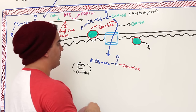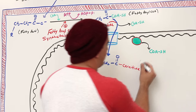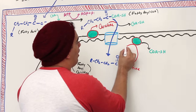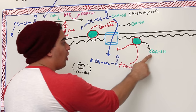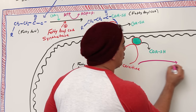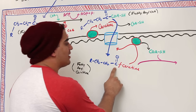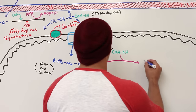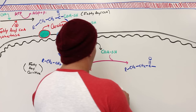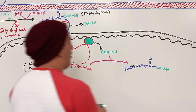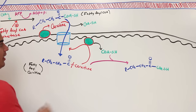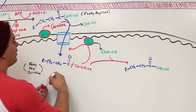An enzyme takes a coenzyme A and adds it onto the fatty acyl carnitine while simultaneously ripping off the carnitine. The result is again a fatty acyl group with a coenzyme A — a fatty acyl CoA inside the mitochondrial matrix. The released carnitine is pushed back out via the translocase and recycled.